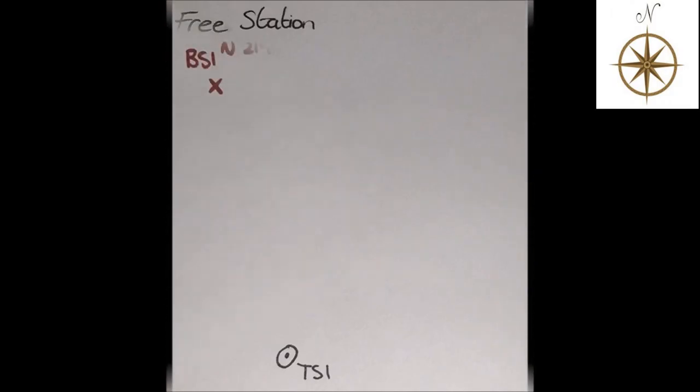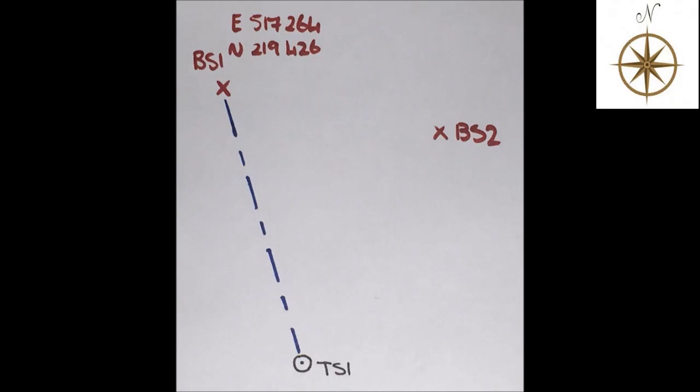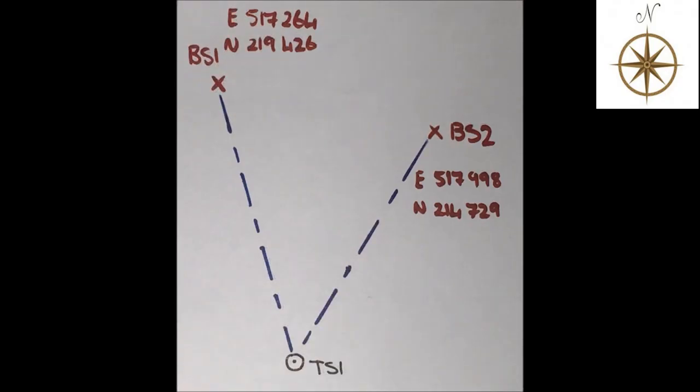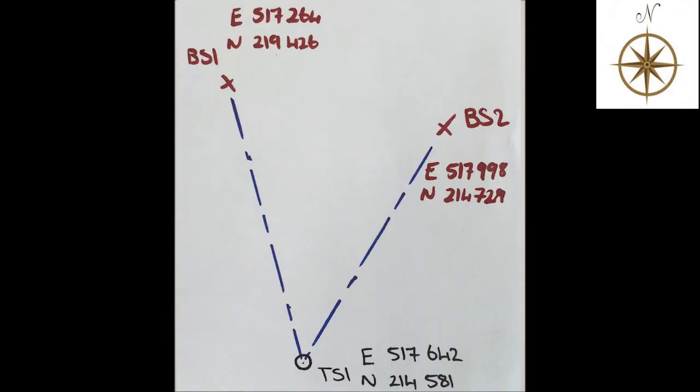First off, set up and level your total station in a clear area where your backsides and the points you wish to set out are in plain sight. Enter the free station mode and select your first backside point. Center the crosshairs of the total station on the staff or reflector you are using and record the data. Proceed to the next backside point and repeat the process and then again record the data. Then press compute and the total station will now be able to calculate your position based on the angles and distances from your recorded data and give you coordinates for your setup location.